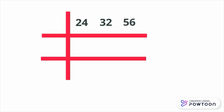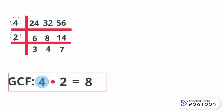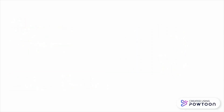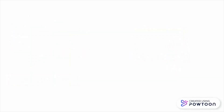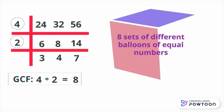Dividing the given numbers by a divisor of 4, the results are 6, 8, and 14, which are still divisible by 2, resulting in 3, 4, and 7. Multiplying 4 and 2, the product is 8. Therefore, the GCF is 8, meaning 8 arrangements — 8 groups or 8 sets of different balloons in equal numbers.